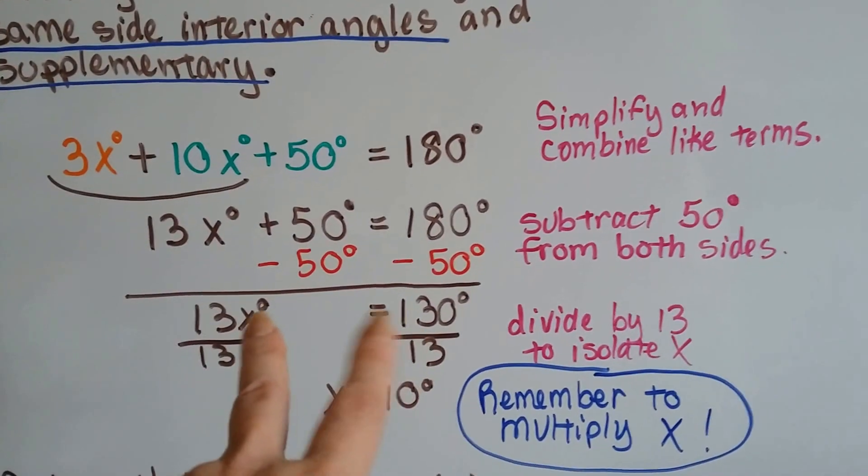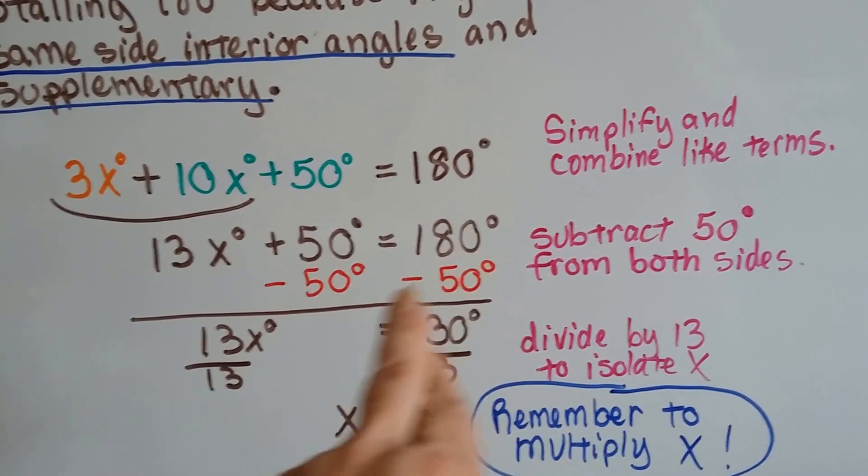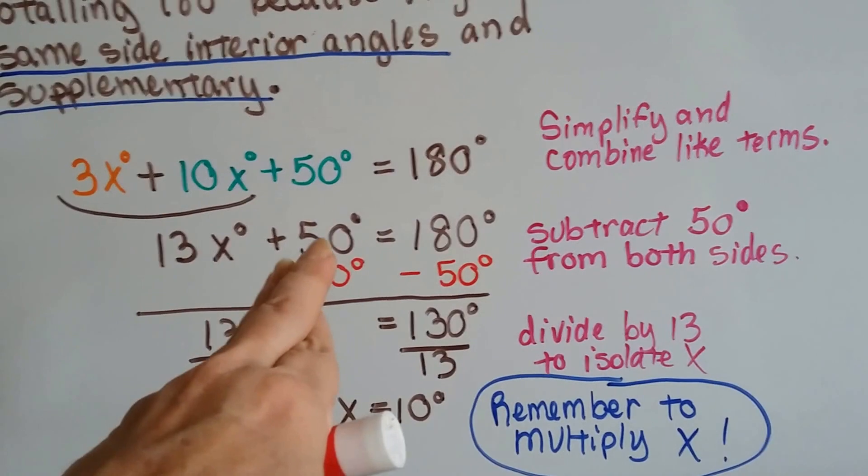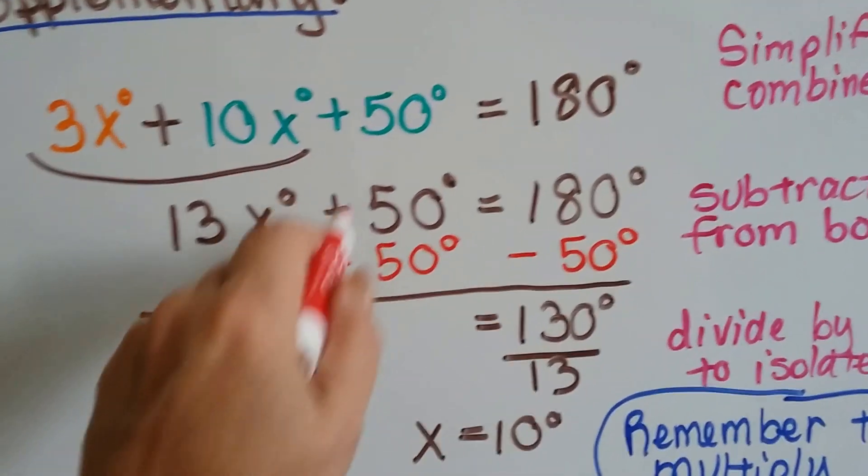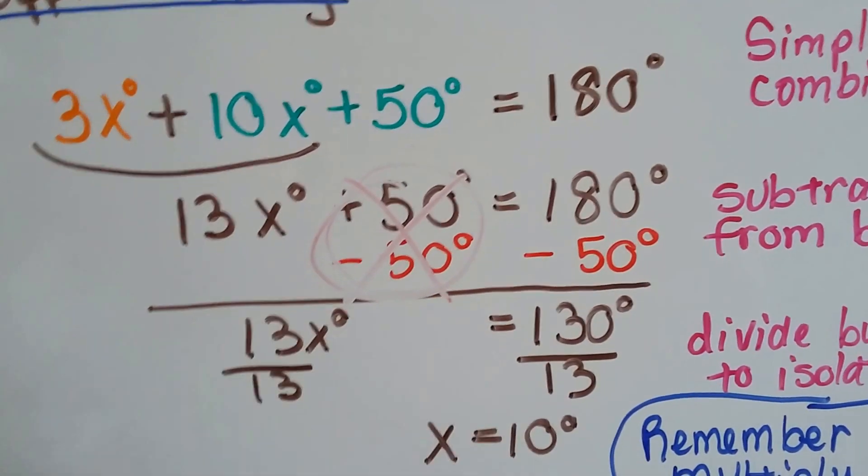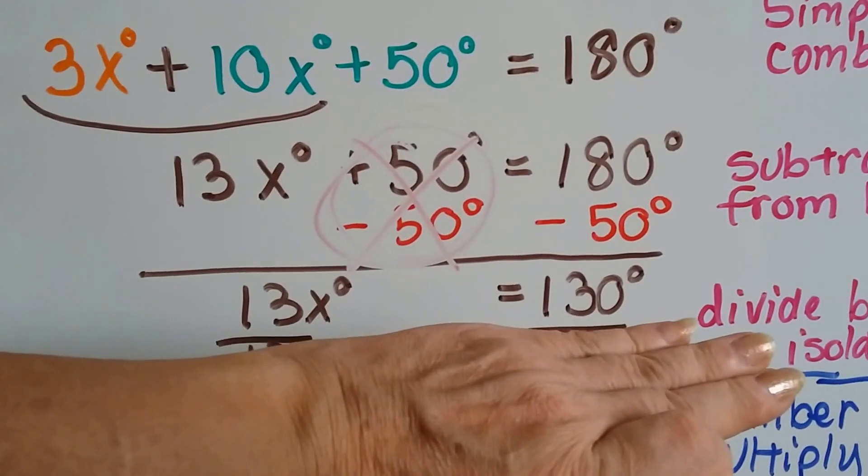Do you remember what we do next? To get x by itself, we're going to subtract 50 from both sides of the equation. It's like a scale. It balances. What we do to one side, we have to do to the other. So now, plus 50 degrees minus 50 degrees became a zero pair, and that canceled out. Now we've got 13x degrees equals 130 degrees.